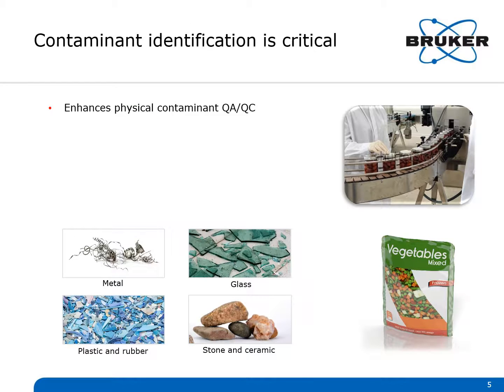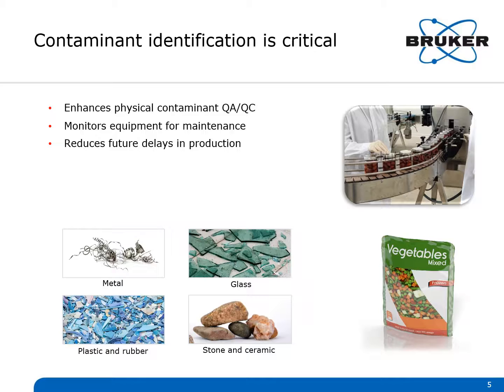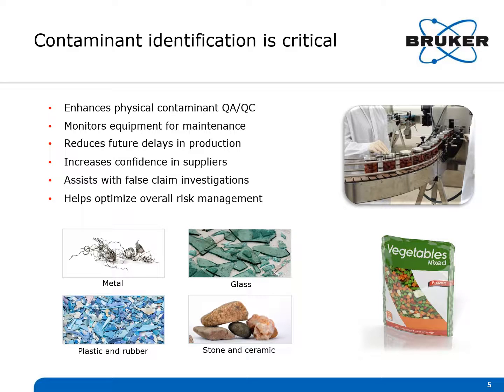Contaminant identification is critical. It enhances QA/QC programs. It helps maintenance monitor production equipment and helps reduce future delays in production. It helps increase confidence in suppliers. It assists with false claims investigations. And it helps optimize your overall risk management.